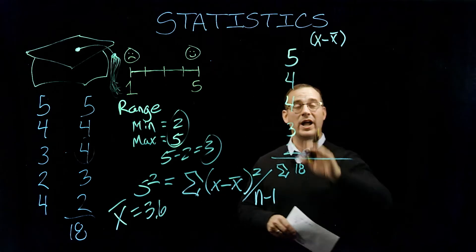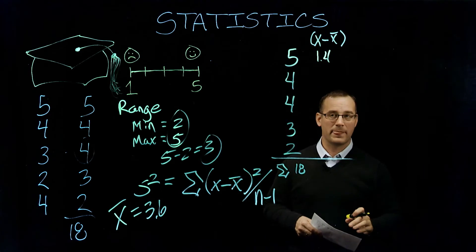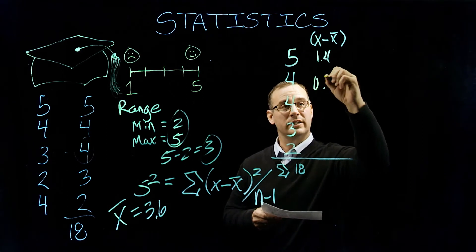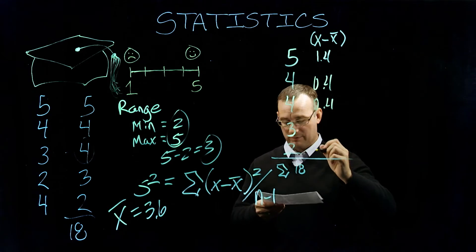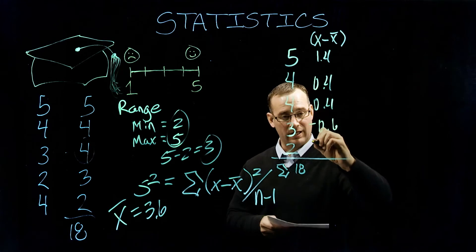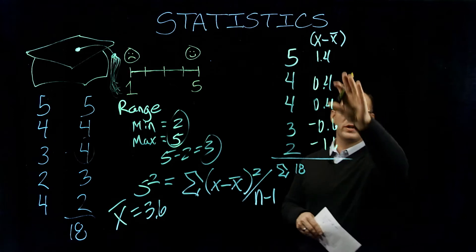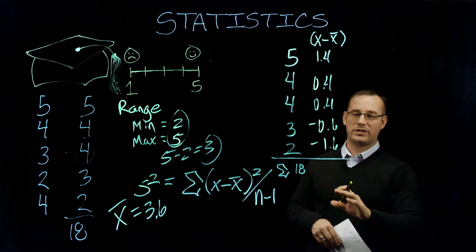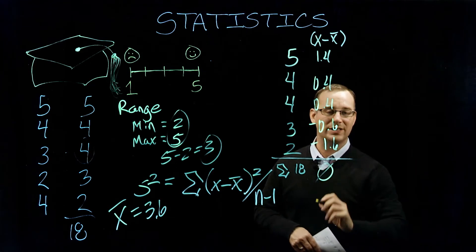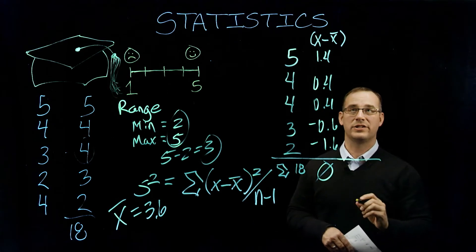So 5 minus 3.6 is 1.4. 4 minus 3.6 is 0.4. So we have 0.4, 0.4, minus 0.6, and then negative 1.6. Interestingly enough, and you can always check your math to make sure here that your calculations are correct, is this value right here should always add up to 0. If it doesn't, then one of your calculations is off.